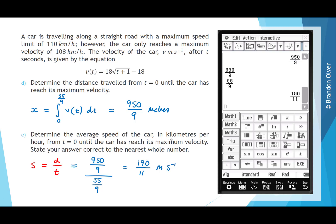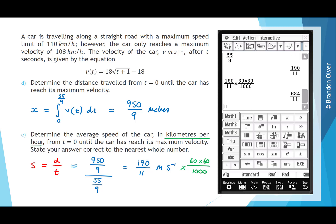To convert from metres per second into kilometres per hour, we multiply by 60 × 60 over 1,000. So we take the fraction 190/11 and multiply it by (60 × 60)/1,000. That gives 684/11, and as a decimal that's 62.18. From the CAS calculator, we found that equals 684/11, which is 62 kilometres per hour to the nearest whole number.